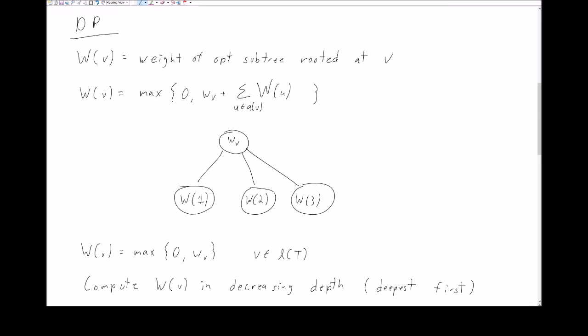In order to solve the optimal subtree problem in a dynamic programming framework, we need the ingredients for a dynamic program. First, we need to identify the smaller subproblems. Then we need to develop a recursive formula that builds solutions to larger problems out of smaller ones. Finally, for the smallest subproblems, we need to identify the constants to set them to.